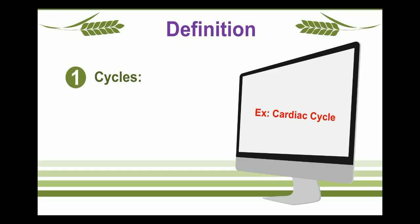Our body has more than 100 cycles. Second definition — Rhythms: A series of events that occur according to a time or schedule. Such cycles are known as rhythms.